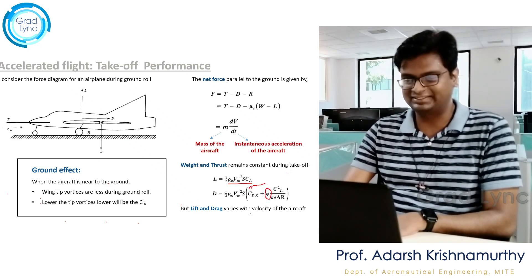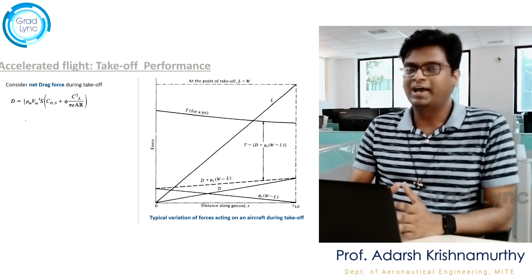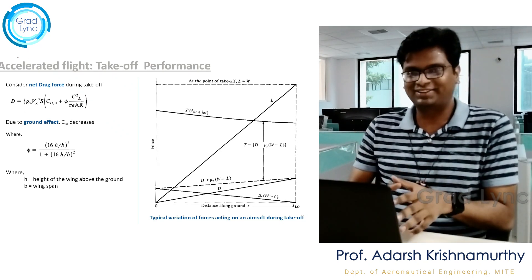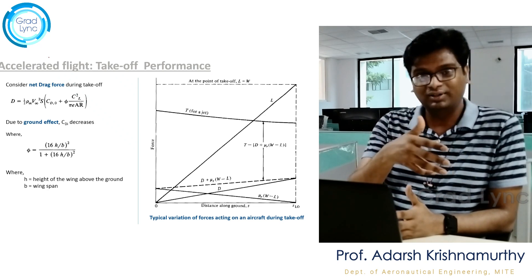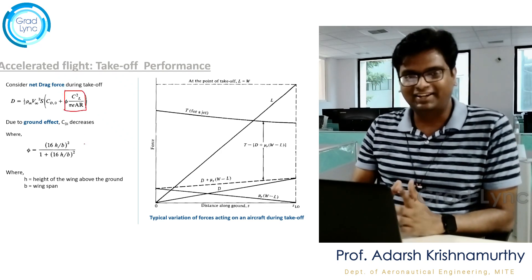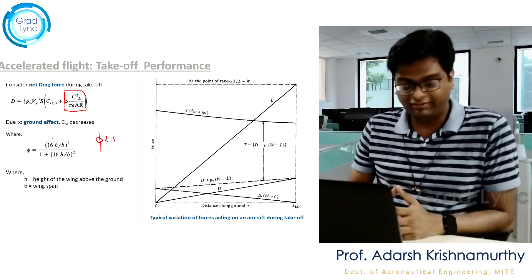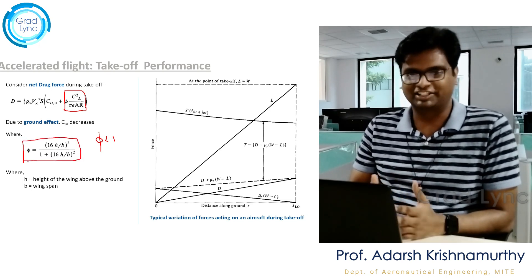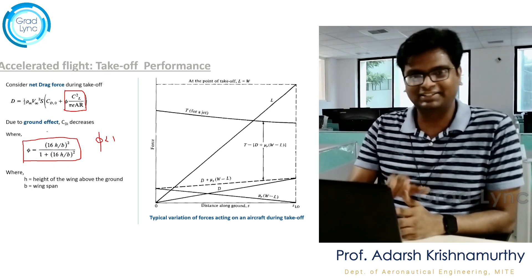Previously we understood induced drag coefficient as just k·CL² or CL²/(π·e·AR). Now we have a new term φ. When the aircraft is nearer to the ground and wing tip vortices do not form, the net induced drag is less compared to when the aircraft is fully airborne with no ground effect. This ground effect is defined by φ = (16h/b)² / [1 + (16h/b)²], where h is the height of the wing above the ground and b is the wingspan.